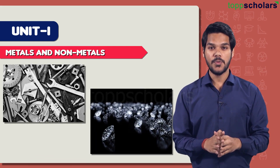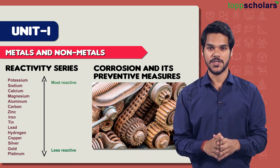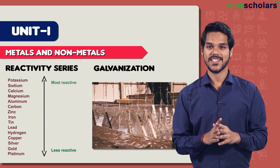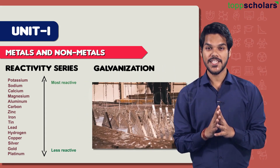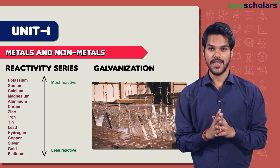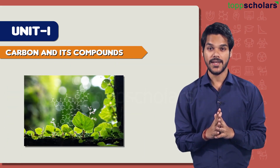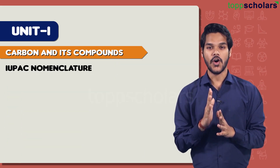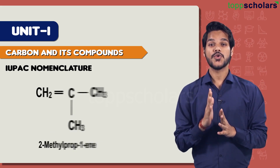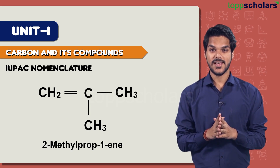Next is Metals and Non-metals. The most important concept here is the activity series, along with corrosion and its preventive measures. Make sure to study about the galvanization process. Moving on to Carbon and Its Compounds — from this chapter you are expected to write the IUPAC nomenclature of organic compounds, and there will also be questions based on drawing the structures of organic compounds.